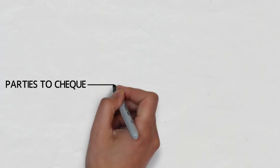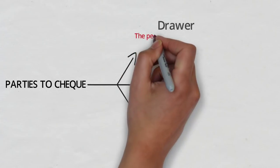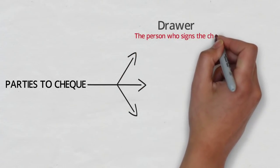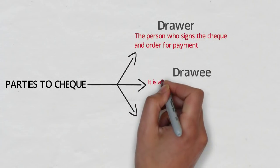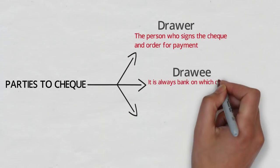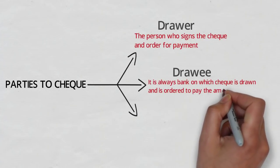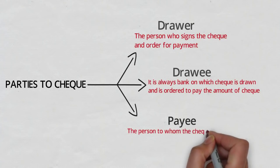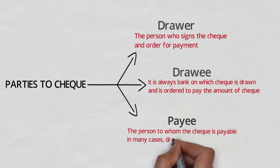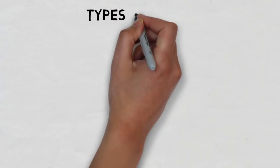There are basically three parties to the check. The first one is the drawer — a drawer is a person who signs the check and orders the payment. The second one is the drawee — the drawee is always the bank on which the check is drawn and is ordered to pay the certain amount mentioned on the check. The last one is the payee — the person to whom the check is payable.